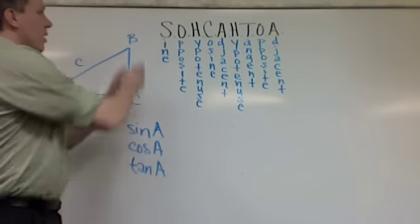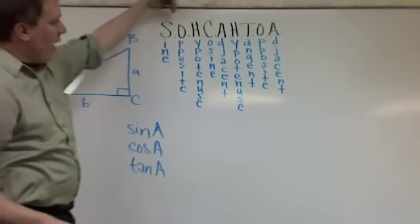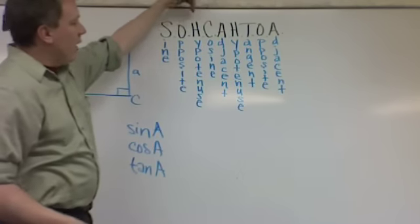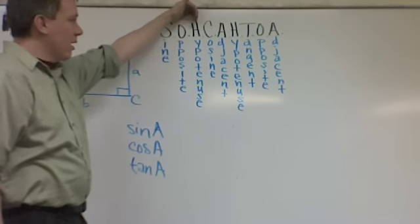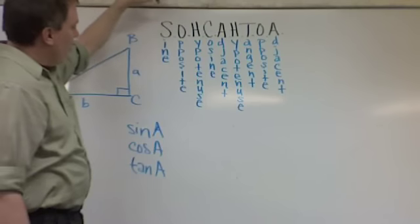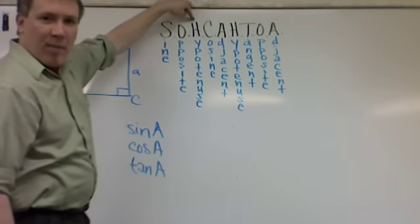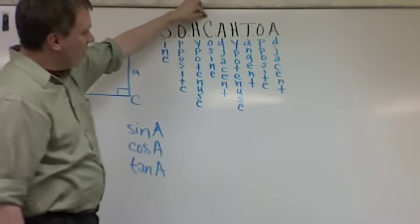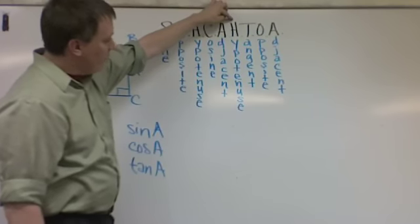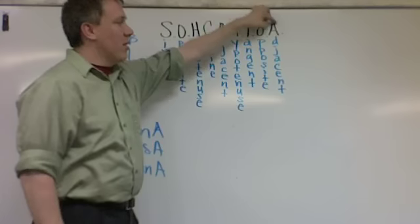The sine of A, SOHCAHTOA, this says that the sine is the opposite side divided by the hypotenuse. We'll go over what that means in just a second. It's always what it is, and then what's the top of the fraction, and then the bottom of the fraction. That's how this works. So sine is opposite over hypotenuse. Cosine is adjacent over hypotenuse. We'll go over what the word adjacent means. And tangent is the opposite over adjacent.